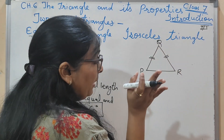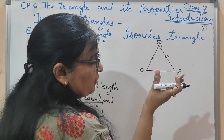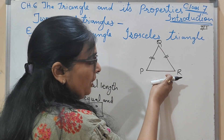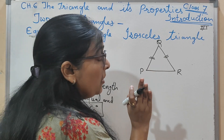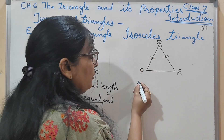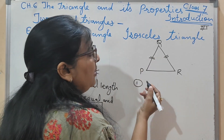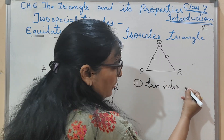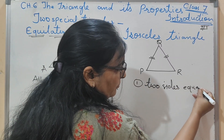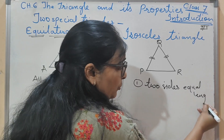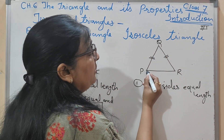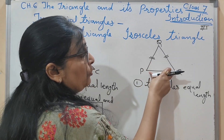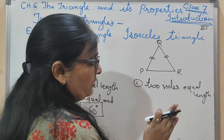If those two sides are equal, then the third side is called the base. So yeh PR ho jayega, yahan pe base. Pehli property: two sides are of equal length. And since these two sides are equal, the third side PR is called the base.